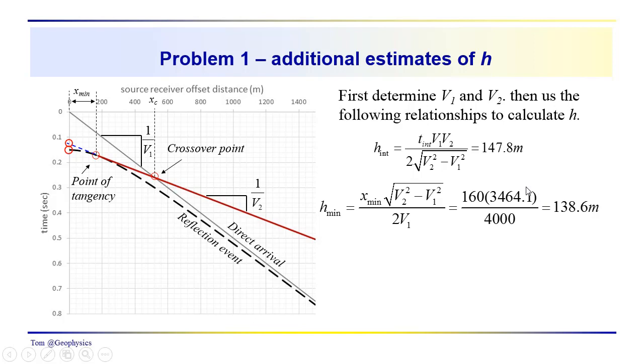And generally, you wouldn't expect them to be, depending on how you read off these numbers. Even with this precise data set, this isn't real data, this is just a synthetic data set. And the arrival times are shown very precisely on the plot. But you have to estimate just exactly where this point is, or just exactly where this x sub c is, or just exactly where this time intercept is. So, we're going to come up with slightly different answers. Now, the crossover distance, this x sub c, I'm using a value of 520, and just using the formula that we developed earlier for the thickness of the layer using the crossover distance. And here, I get a value of 150.1.